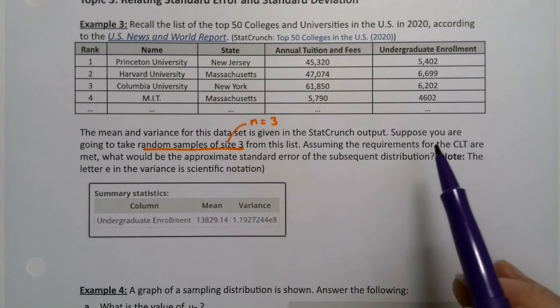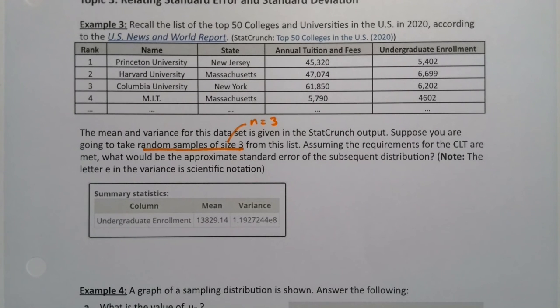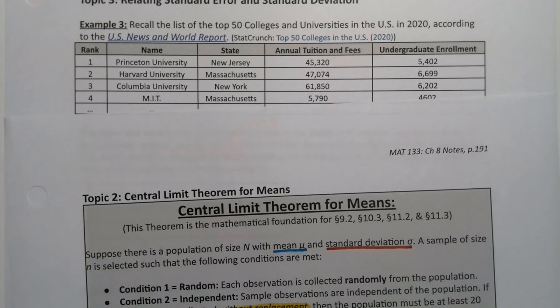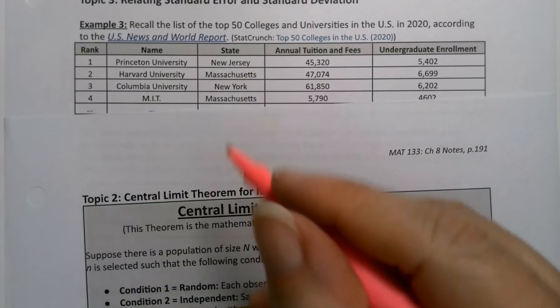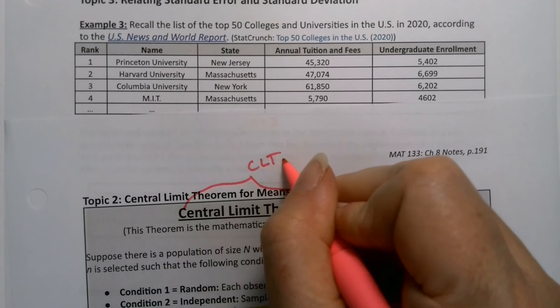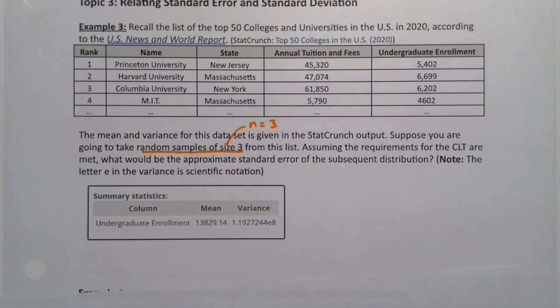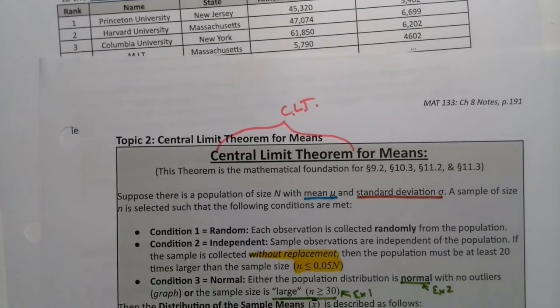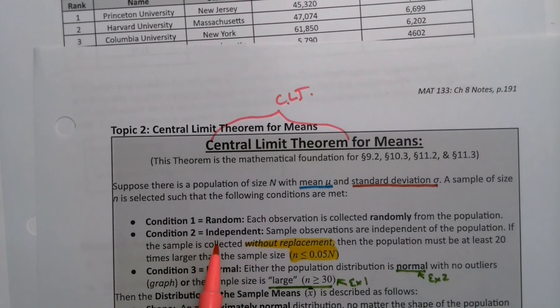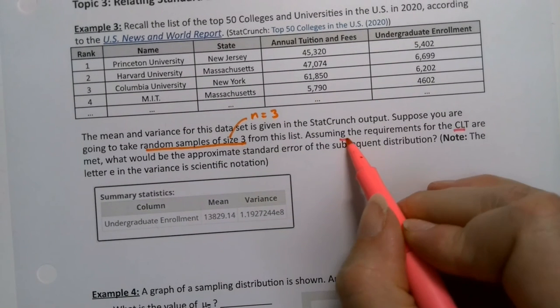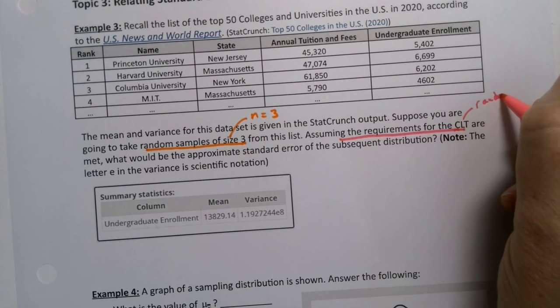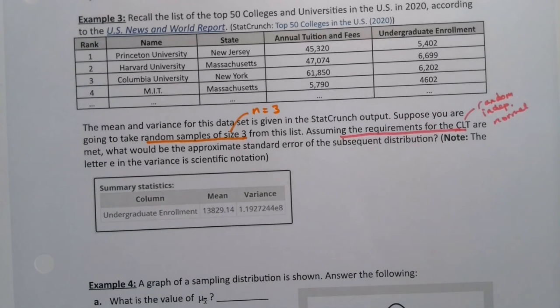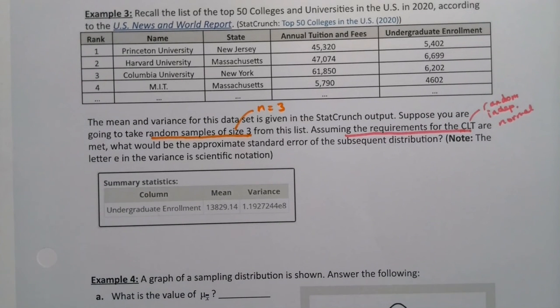I have the mean and the variance for this data set given in the StatCrunch output below. Suppose you're going to take random samples of size 3 from this list, so n is equal to 3. Now assuming the requirements for the central limit theorem are met - and I abbreviate the central limit theorem a lot as CLT - they're saying assume those things are taking place: random, independent, normal. What would be the approximate standard error of the subsequent distribution?